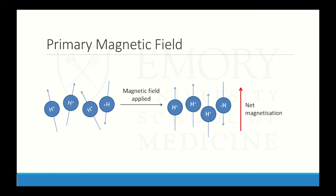At rest, our hydrogen atoms have vectors in various directions that cancel each other out, so there's no net magnetization. But if you put a patient through a magnetic field, the hydrogen atoms start to align either parallel or anti-parallel to that magnetic field. Most will be parallel, creating net magnetization which can then be further manipulated to create your image.